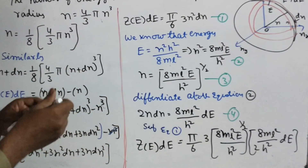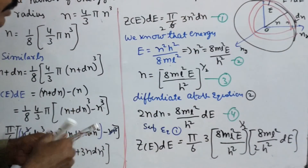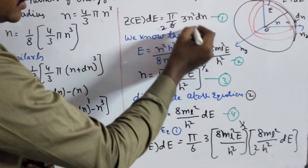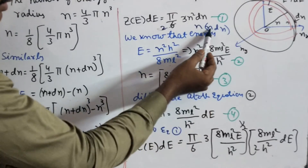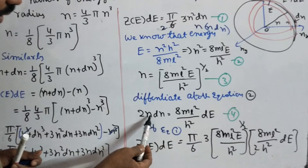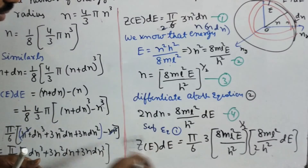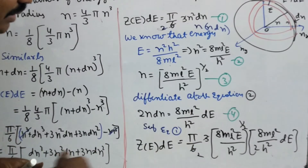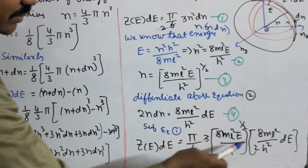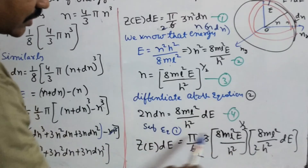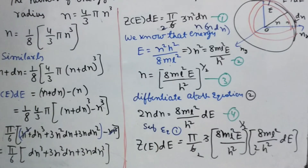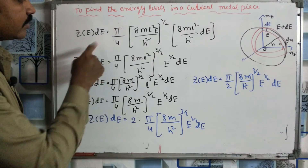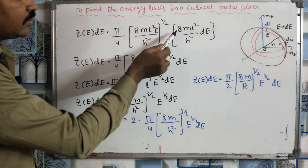Substituting n·dn from equation number two, cancellations give us 3/2 divided by 6, simplifying step by step. We place n·dn and substitute: n dn = (8mL²/h²) × (1/2) × E^(−1/2) dE. Combining and substituting into the volume formula, the final density of states D(E) equation becomes: D(E) = (π/4) × (8m/h²)^(3/2) × E^(1/2) × dE for unit volume.